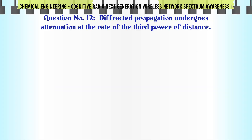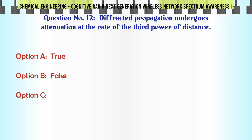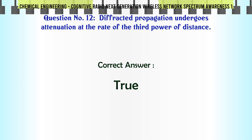Diffracted propagation undergoes attenuation at the rate of the third power of distance. A. True. B. False. The correct answer is: True.